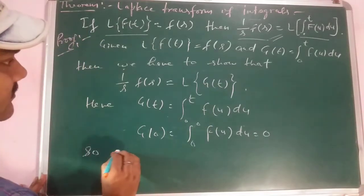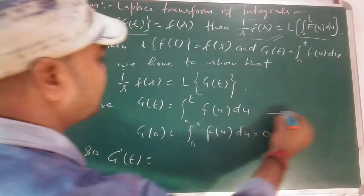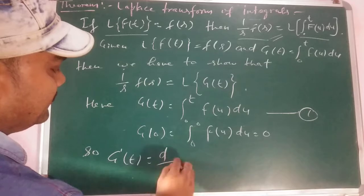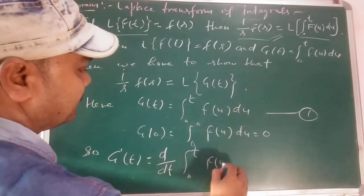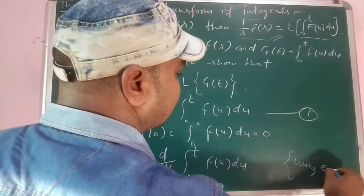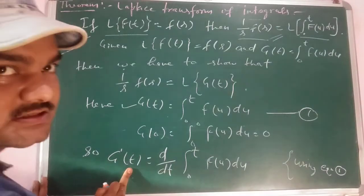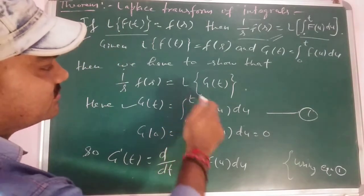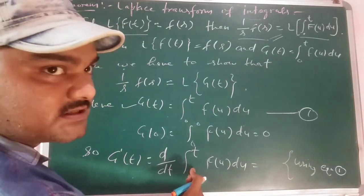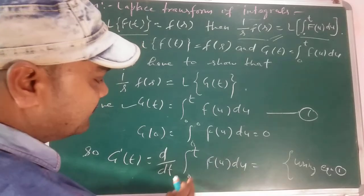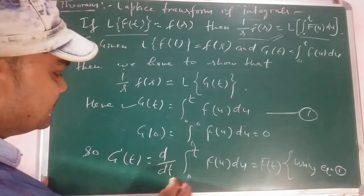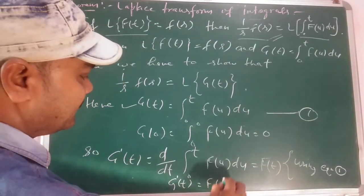So g'(t) = d/dt ∫₀ᵗ f(u) du. Using equation 1, if we take the time derivative, we get d/dt ∫₀ᵗ f(u) du. When we differentiate this integration, we get f(u) with limits 0 to t, which simply gives f(t). So finally we get g'(t) = f(t).